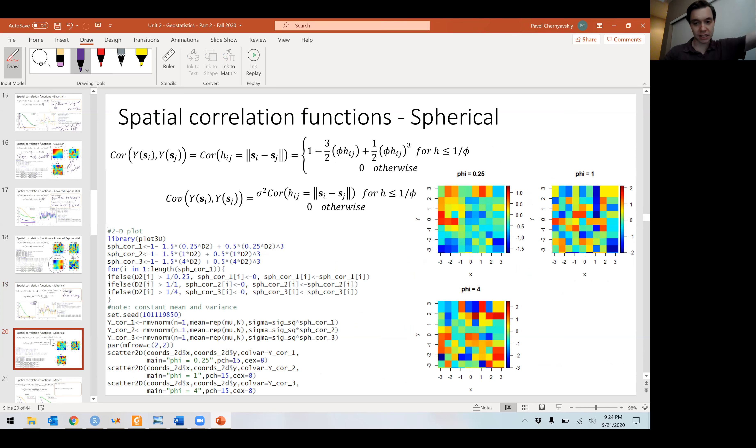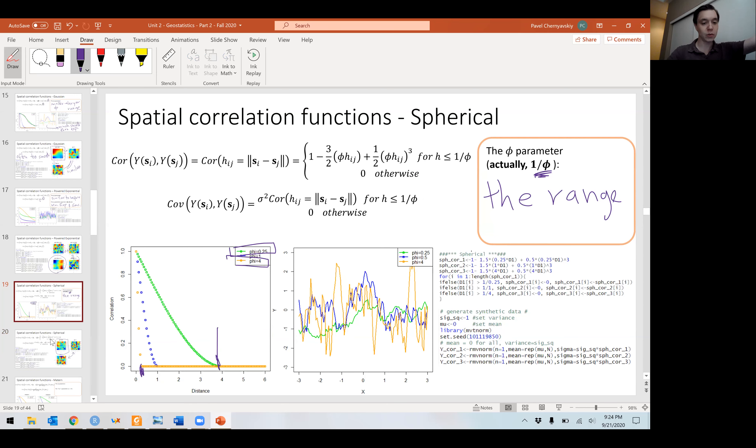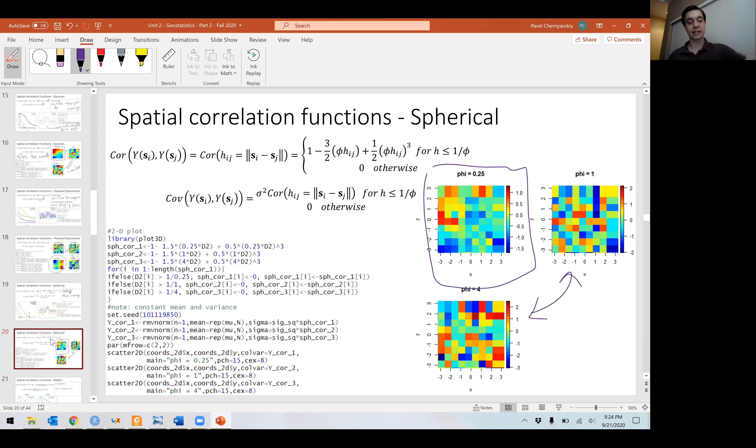Again, similar concept. Strong spatial correlation looks different. But when we start to get weaker, phi equals one and phi equals four constitute fairly weak spatial correlation. It becomes hard to differentiate, hard to estimate.